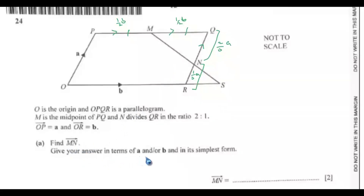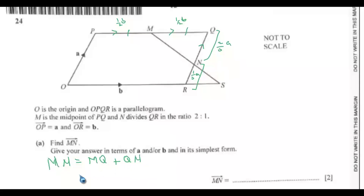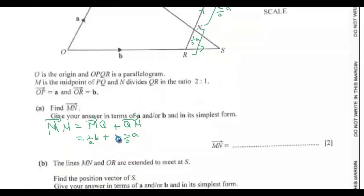Find vector MN in terms of A and B in its simplest form. MN = MQ + QN. MQ = (1/2)B and QN = −(2/3)A (since QN goes in the opposite direction from RQ). So MN = (1/2)B − (2/3)A.